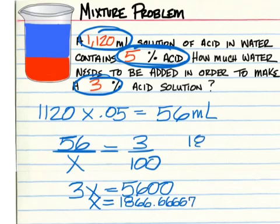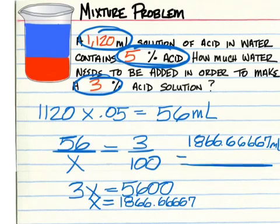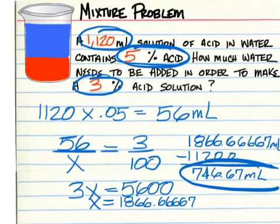And this number is the total amount in milliliters of the new contents, and subtract from that 1,120. When you take away 1,120, you come back with 746.67 milliliters of water that must be added.